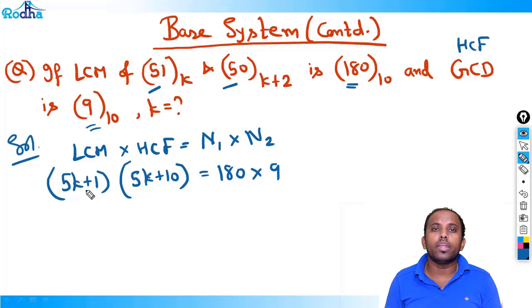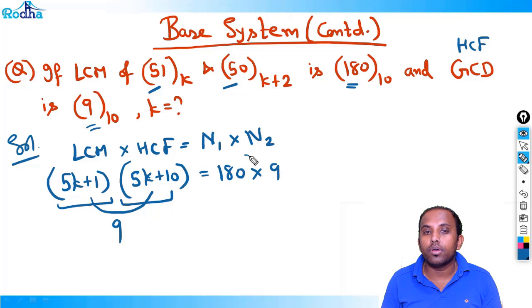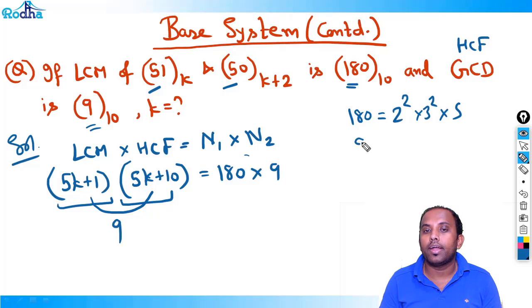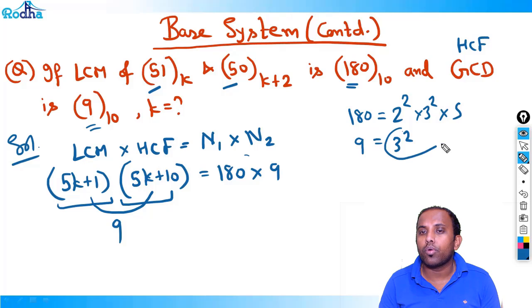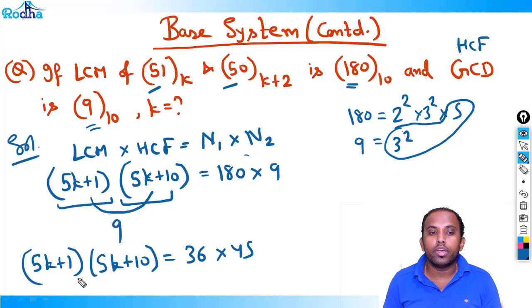Try to solve this — it's a quality question. Keep it logical. The first term is 5K+1 and the second term is 5K+10. The difference of these two terms is 9. So try to write the right side also in terms of a difference of 9. If you observe: 180 = 2²×3²×5 and 9 = 3². The combination to make a difference of 9 is: 3²×5 = 45 and 2²×3² = 36. So (5K+1)(5K+10) = 36×45. Here also the difference between the two terms is 9.